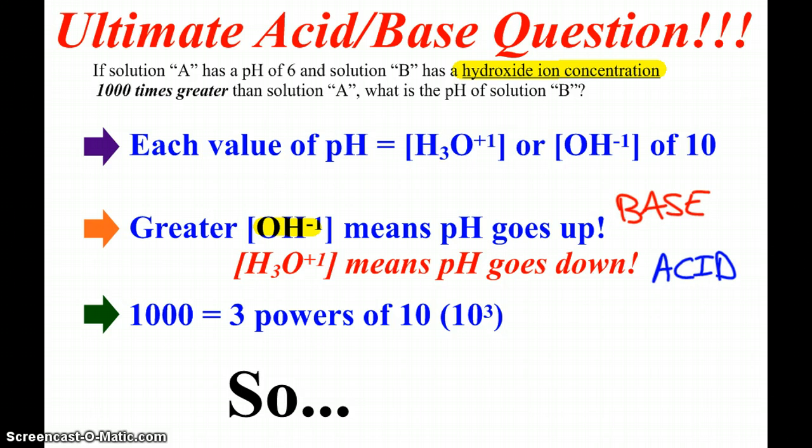So in this problem here, we see the hydroxide ion concentration, and so since we see hydroxide, we know that the pH is going up. How much? Depends on how many powers of 10. Since it's a thousand times greater, that's three powers of 10, 10 cubed. How do I know for sure? Three zeros. If I said a million times greater, it would be six powers of 10, and so the pH would be changing by six. If I said a hundred times greater, it would be two.